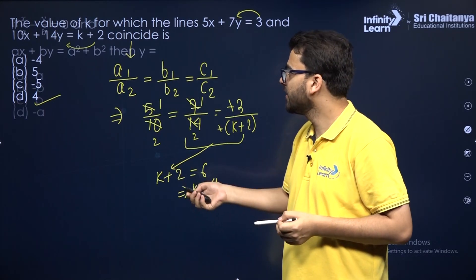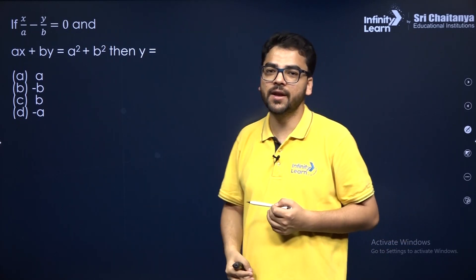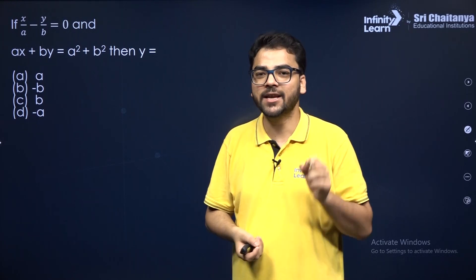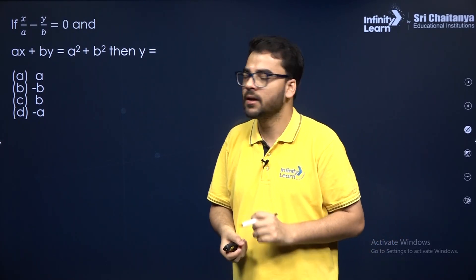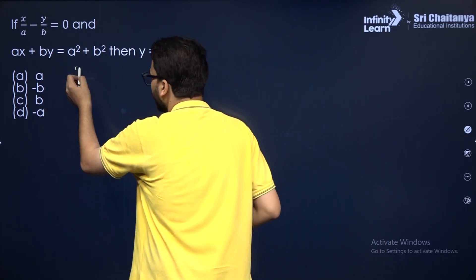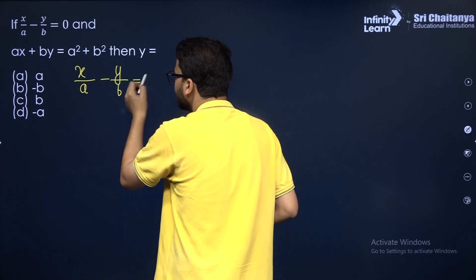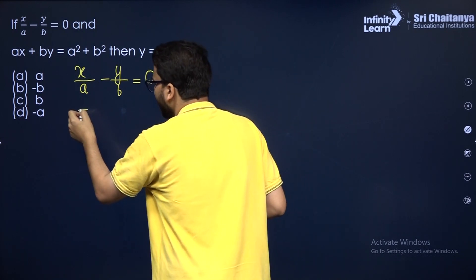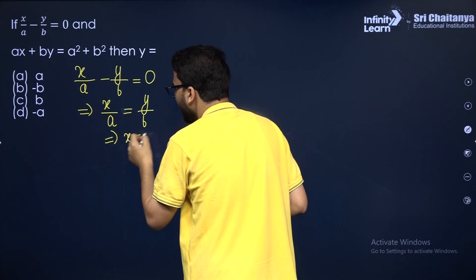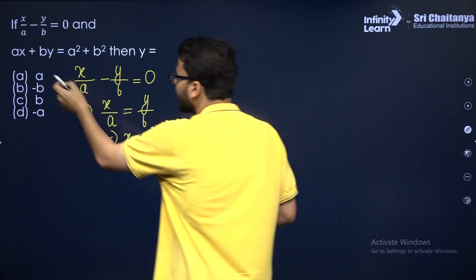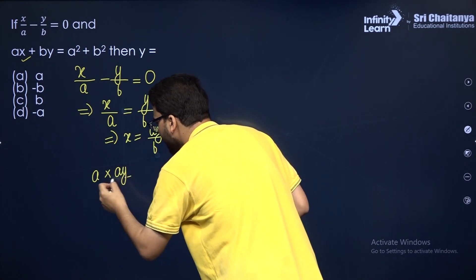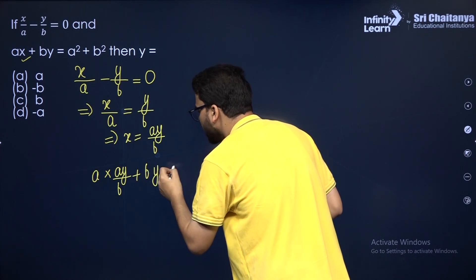Let us take the next question. You have to solve this pair of linear equations in two variables, but you only need to find y — not both x and y. Many students find both values unnecessarily. From the first equation, x by a minus y by b equals 0, so we can substitute x by a equals y by b, giving x equals ay by b. Putting this into the second equation: ay by b plus by equals a squared plus b squared.